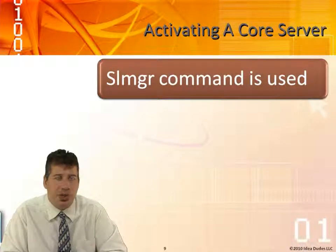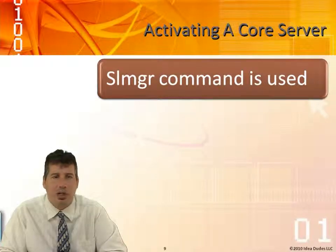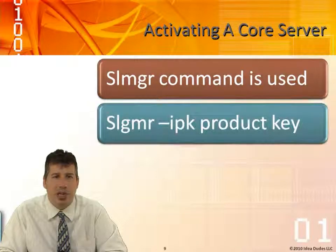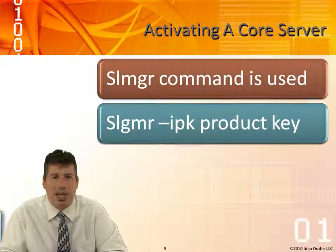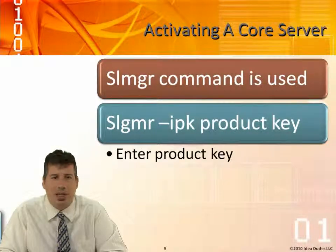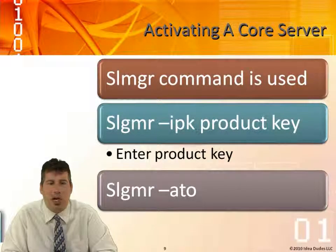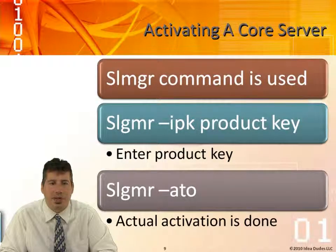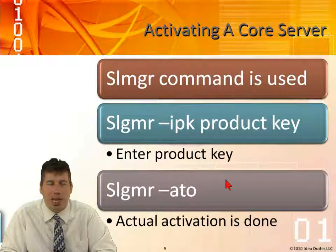Activating a Core Server is a little different because we don't have a GUI — we have to do it through the command line using the SLMGR command. To insert the product key, we use slmgr with the -ipk switch followed by the product key. Then to actually activate the server, we run slmgr -ato. You have to insert the key first, then run the actual activation.